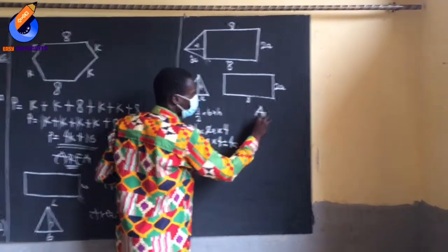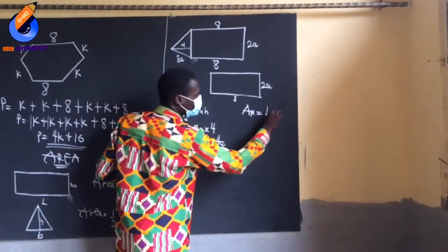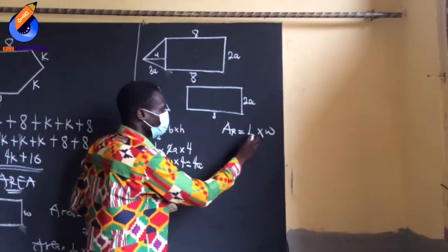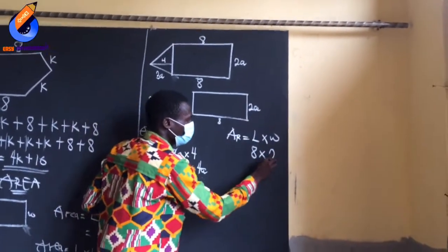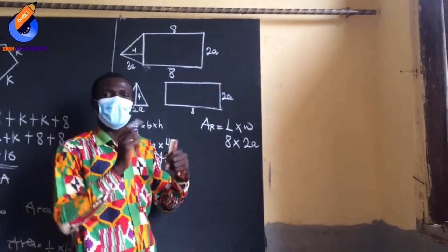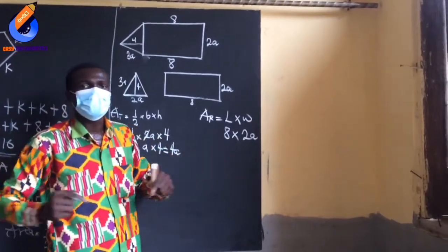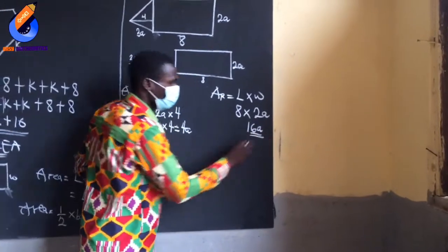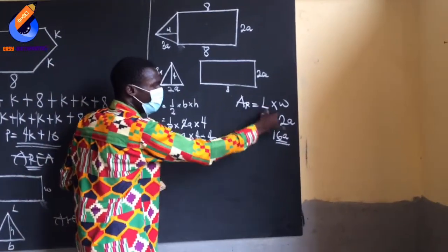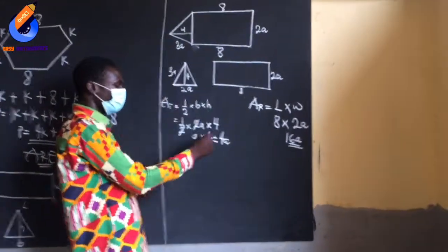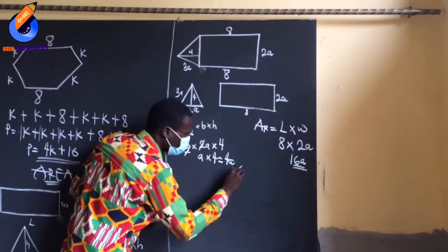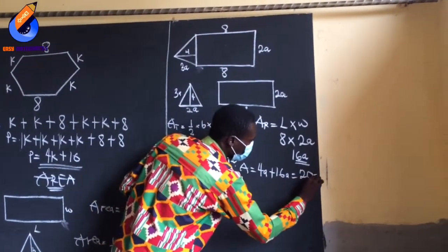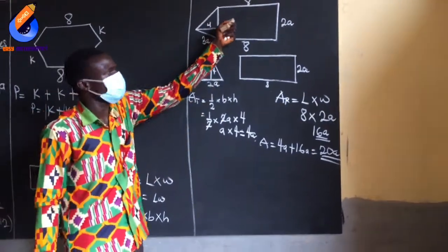Then I will find the area of the rectangle, which is length times width. The length is 8 and the width is 2A. Now we are multiplying, not adding, so 8 times 2A is possible: 8 times 2 is 16, so this gives me 16A. The area of the rectangle is 16A. The area of the triangle is 4A. So put the two together: the total area becomes 4A plus 16A, which equals 20A.